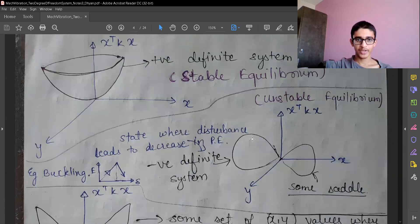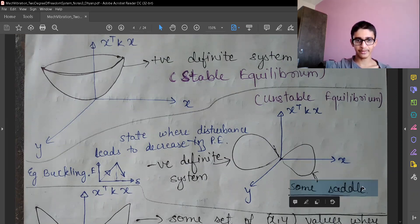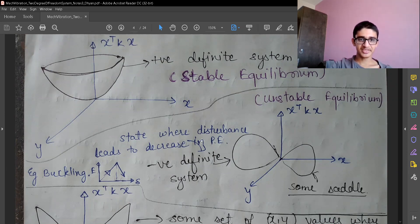Now let's come to unstable equilibrium. This is also very complex and the surface can be said as some kind of saddle surface. This is negative definite system - the state where disturbance leads to decrease in potential energy.